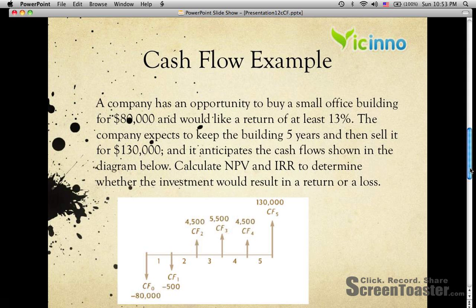A company has the opportunity to buy a small office building for $80,000 and would like a return of at least 13%. The company expects to keep the building for 5 years and then sell it for $130,000 and anticipates the cash flows shown in the diagram below. Calculate NPV and IRR to determine if the investment is good or a loss.